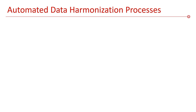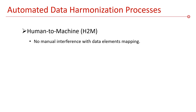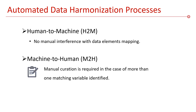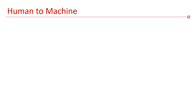The model has two main systematic processes: the human-to-machine and machine-to-human. In the human-to-machine process, data elements mapping is done automatically without requiring manual interference. While in the machine-to-human process, manual curation is required, mainly in cases where more than one matching variable is identified, thereby necessitating domain expert judgment.